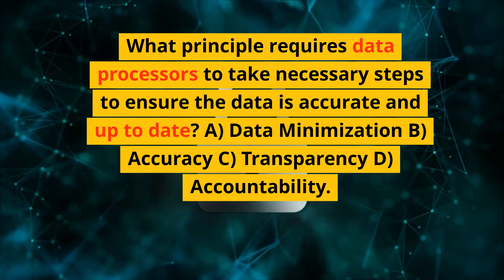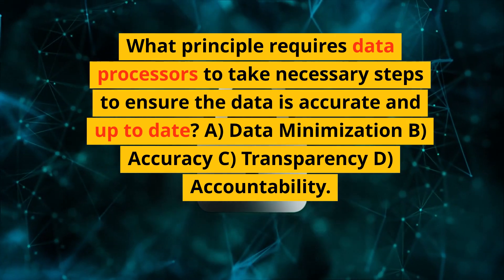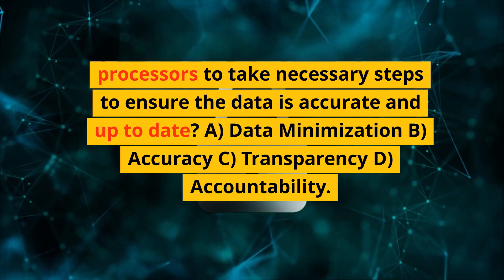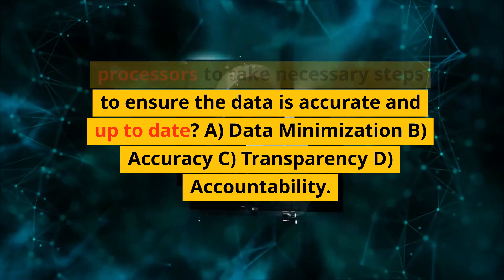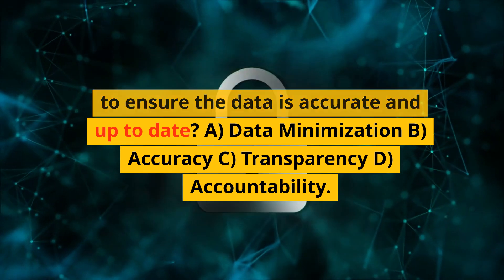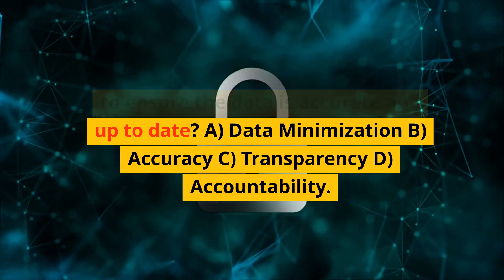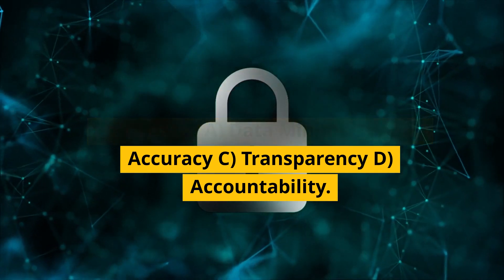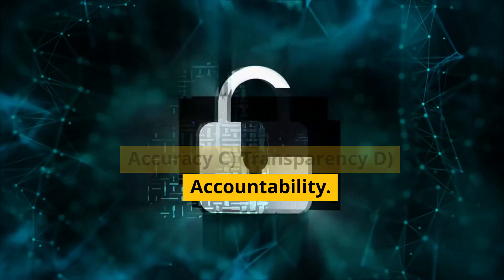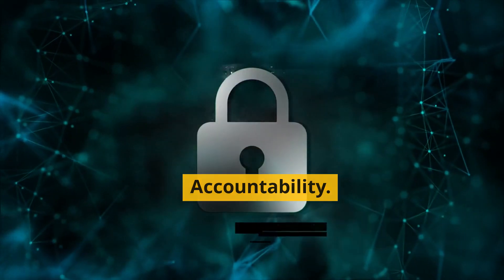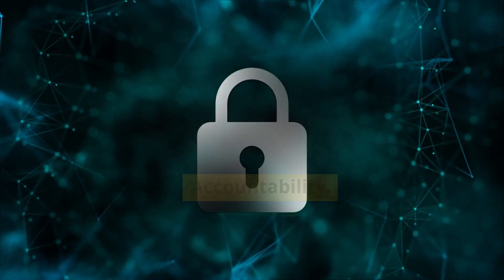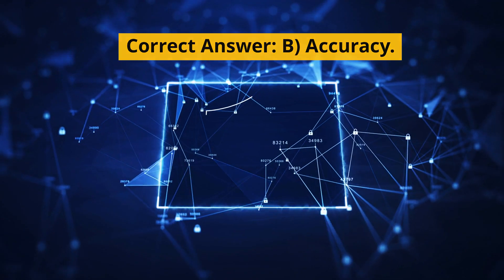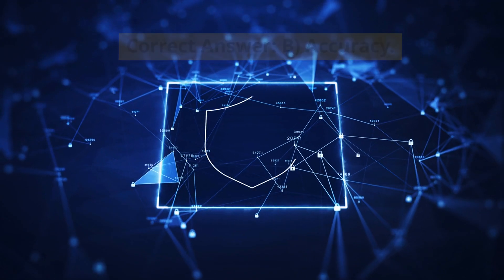What principle requires data processors to take necessary steps to ensure the data is accurate and up-to-date? A. Data minimization. B. Accuracy. C. Transparency. D. Accountability. Correct answer: B. Accuracy.